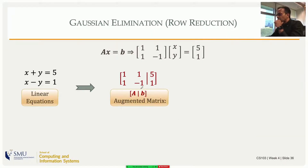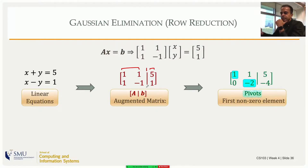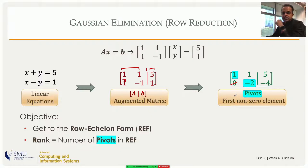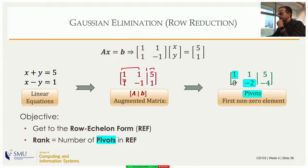The augmented matrix has the coefficient part on one side, a bar for visualization, and the constants on the other side. Then we perform an elementary row operation: subtract the first row from the second row to kill the first element of the second row. If there were more rows, we would subtract a scaled version of the first row from each subsequent row to zero out their first elements. Then in the next step we use the second row's pivot to kill all elements below it.